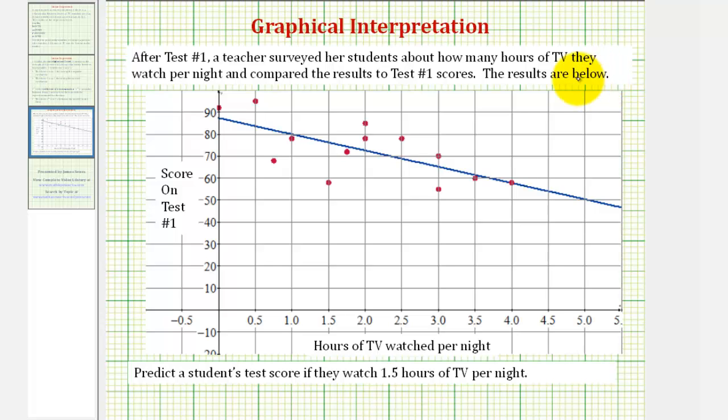What we're seeing below is a scatter plot and a line of best fit. The scatter plot is made up of the red points where each point represents the results from one student.